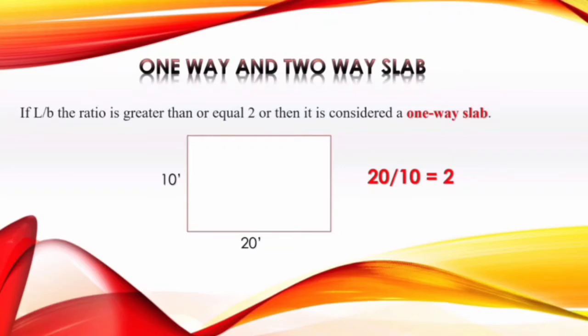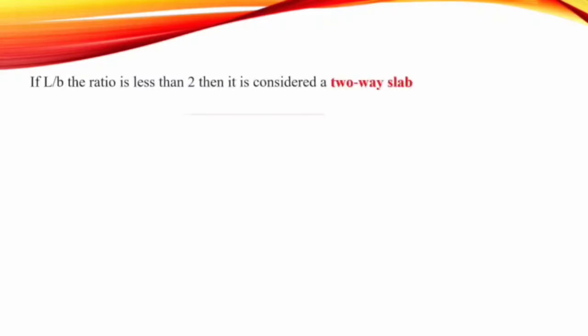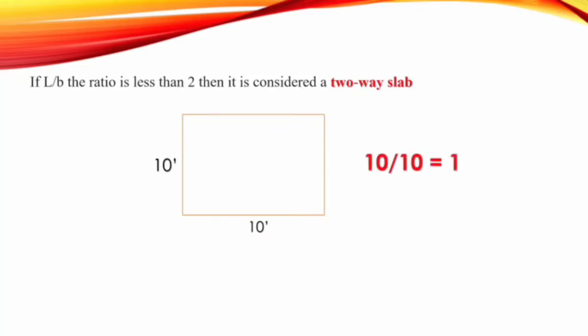Now what is a two-way slab? If the length-to-breadth ratio is less than 2, it will be considered a two-way slab. For example, if a slab has a length of 10 feet and breadth of 10 feet, then 10 divided by 10 equals 1, which is less than 2 — so we call it a two-way slab.